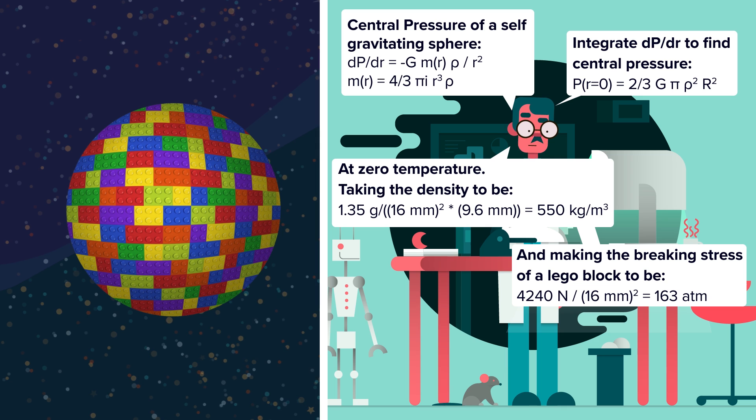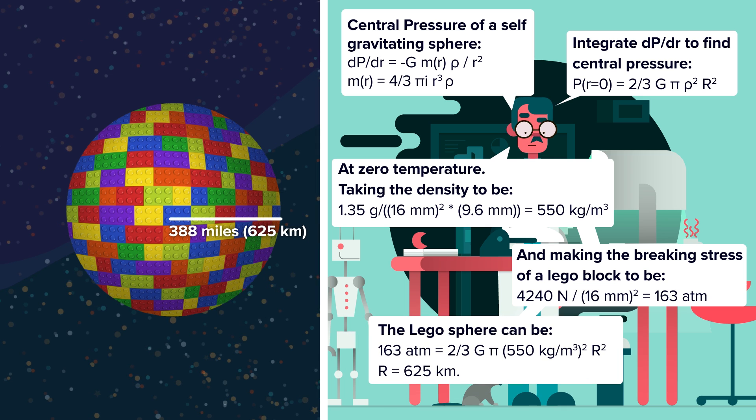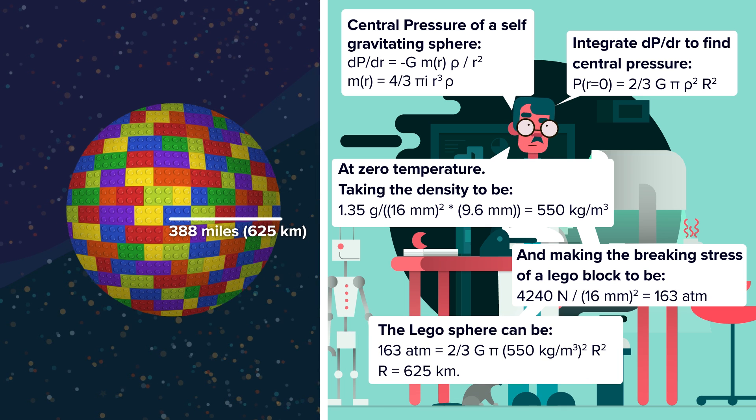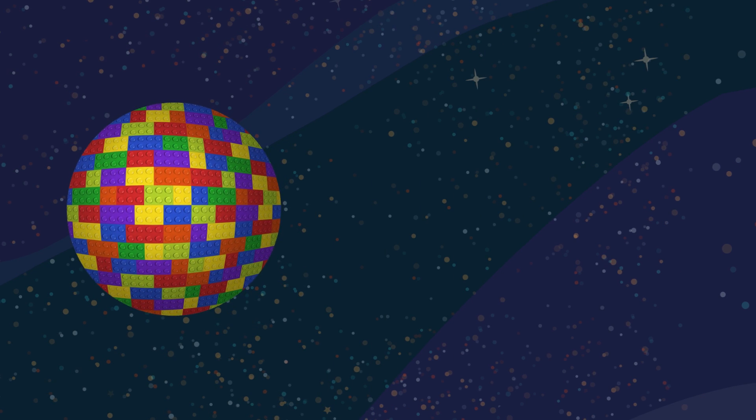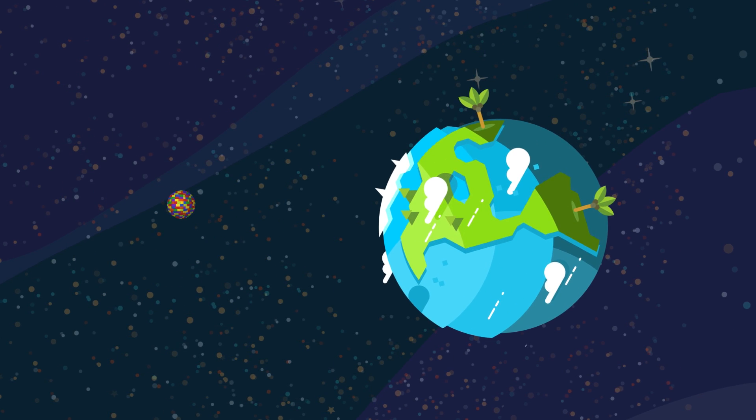When our Lego Earth is 625 kilometers across, barely a tenth the size of the Earth, the central bricks will begin to be crushed from the immense pressure of the bricks above them. So planet Lego starts to collapse on itself when it's barely larger than an asteroid.